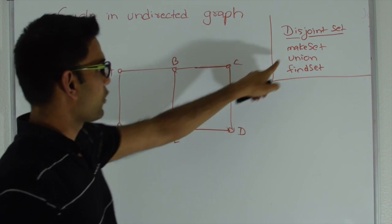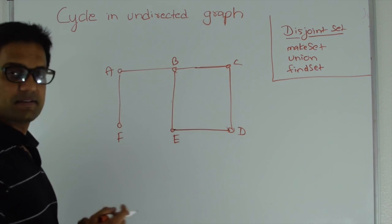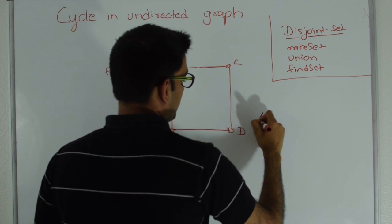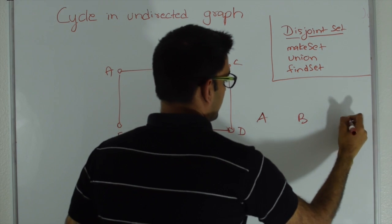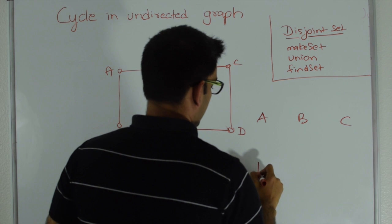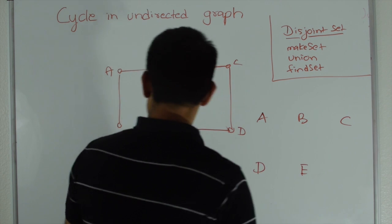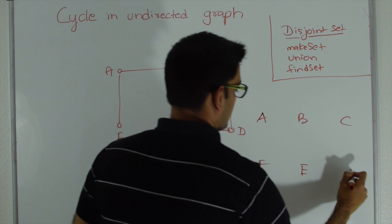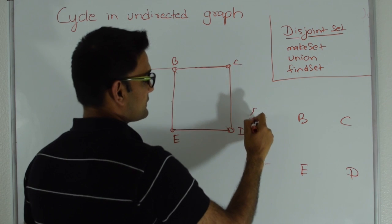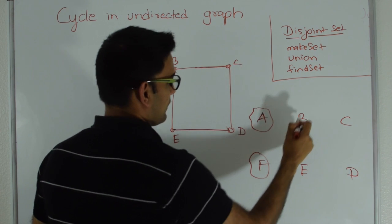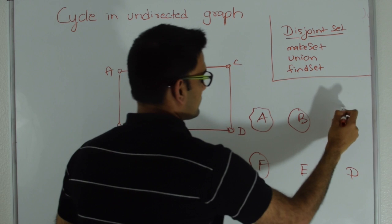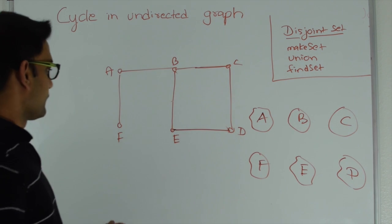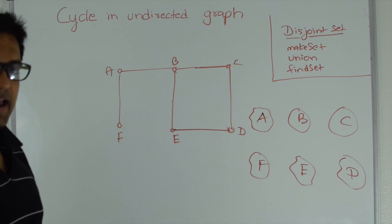First, I call make set on all six vertices. So I have A, B, C, D, F, and E — giving me six separate sets.